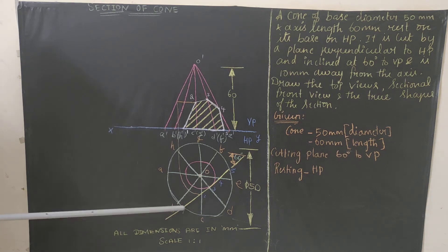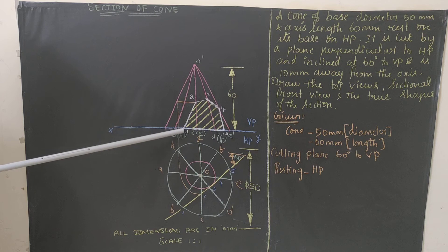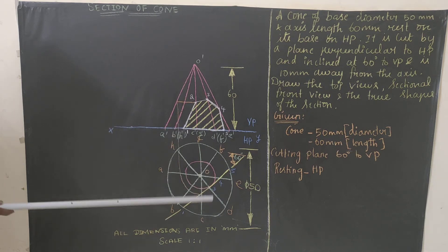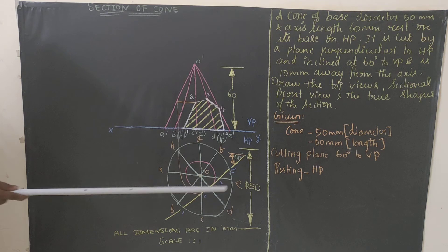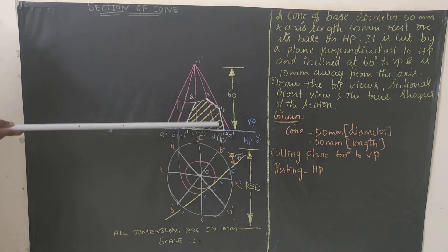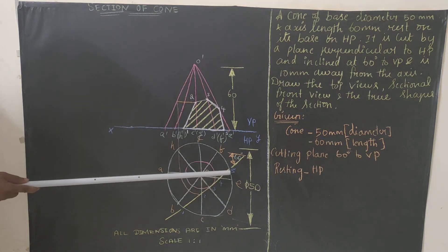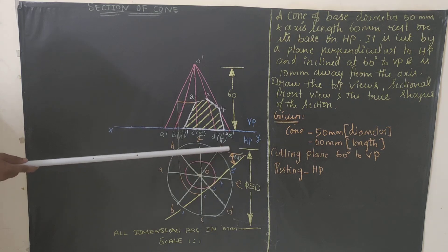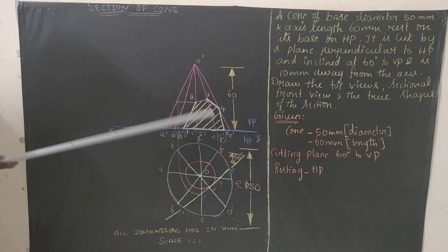To draw the sectional front view: point 1 is between B and C — extend it up so it lies between B-dash and C-dash. Point 3 is between O and D — extend vertically between O-dash and D-dash. Point 4 is between O and E — extend vertically between O-dash and E-dash. Point 5 is between E and F — extend vertically between F-dash and E-dash.